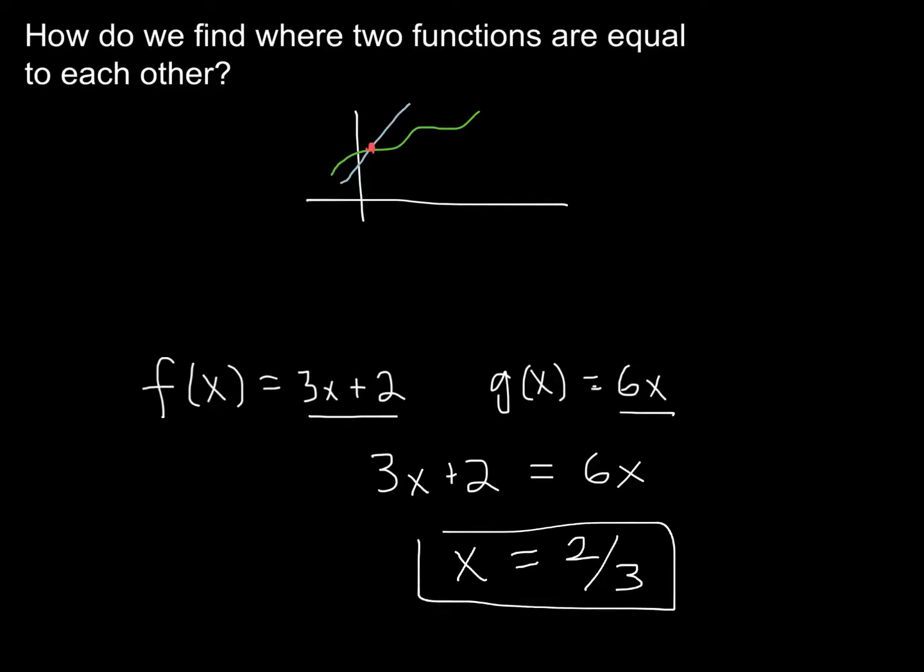And then what you can do is you can actually test this out. There are a couple ways I could test out. I could go back and I could look at the graphs. I could see, do they intersect at x equals 2/3? Or I could try plugging this into the function. So imagine if you plugged in 2/3 for x here, you'd get 3 times 2/3, which is just going to be 2 plus 2, which is 4.